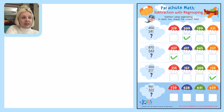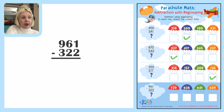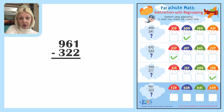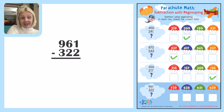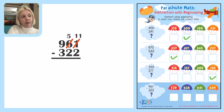The last one is 961 minus 322. One is smaller than two, so here I'm going to need to regroup or borrow. I'm going to add ten to it, so I'm going to cross that out and turn it into eleven. The only way I can do that is by taking from the six and turning it into a five — it has to be one less since I take away from it.